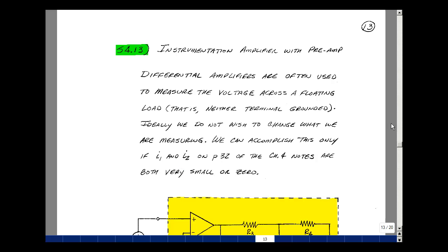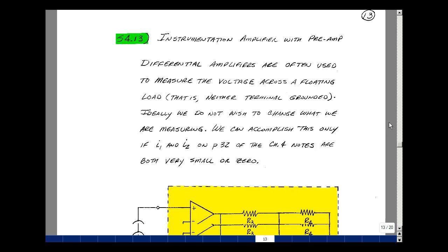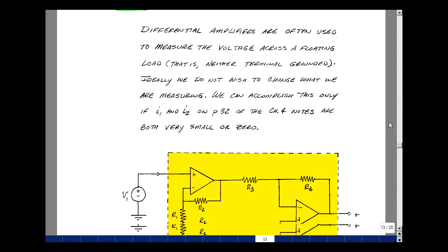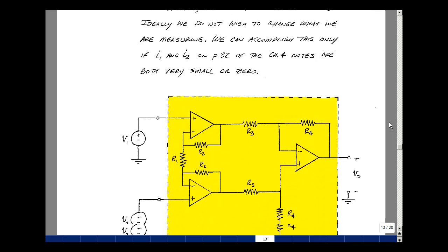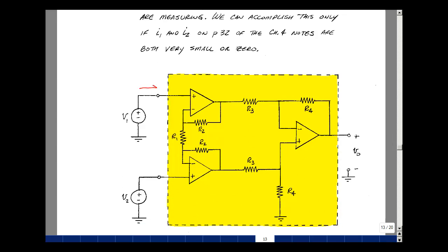Let's take a look at a modification of this circuit called an instrumentation amplifier, and what it has is a differential amplifier with another op-amp circuit we're going to call a preamp. If the op-amp is ideal, we have no current coming in here, and likewise no current coming in here, so therefore no loading effects.